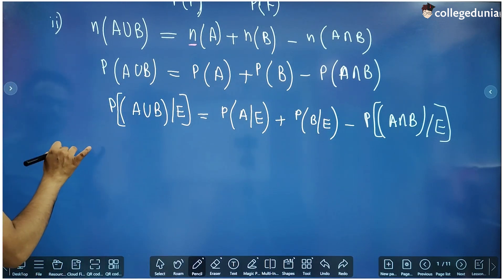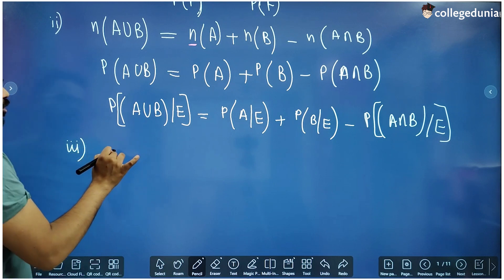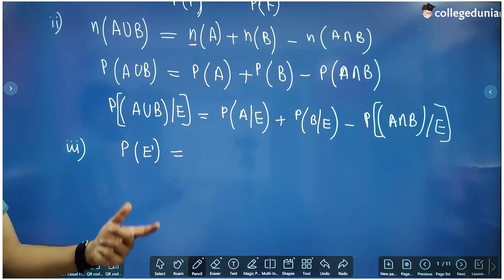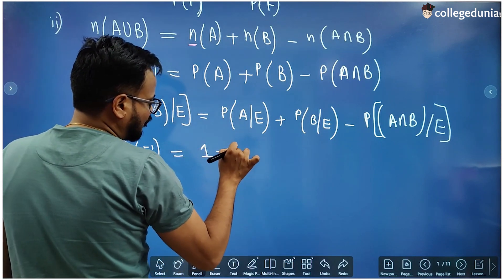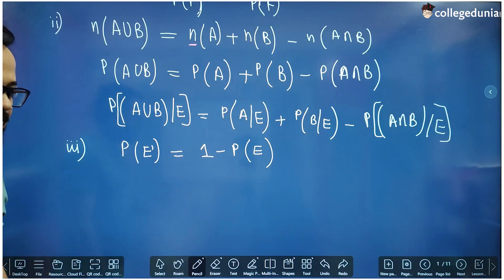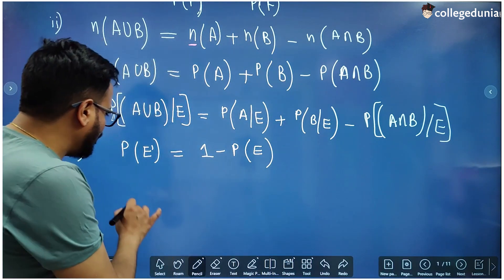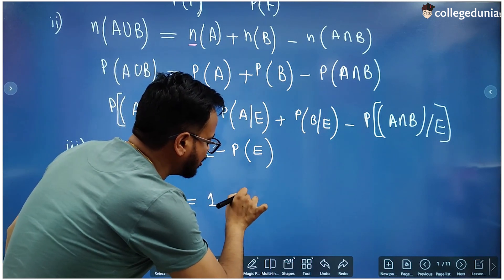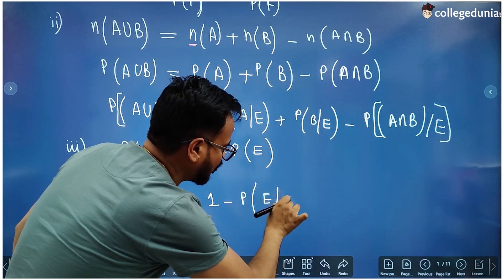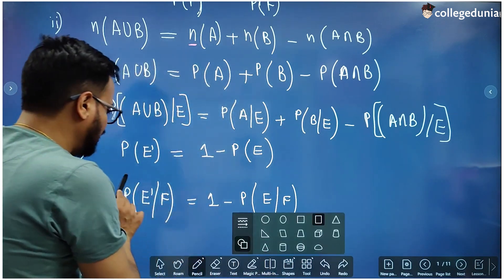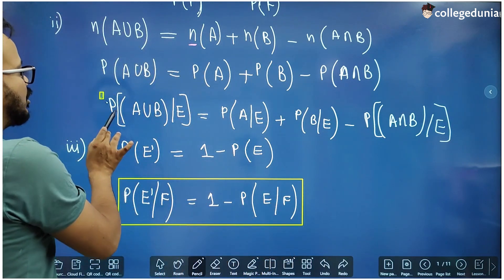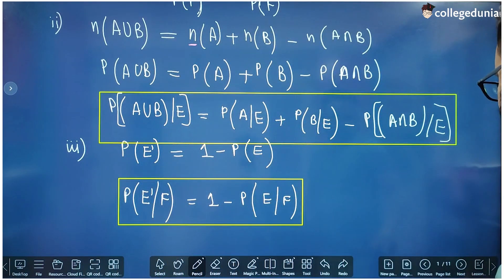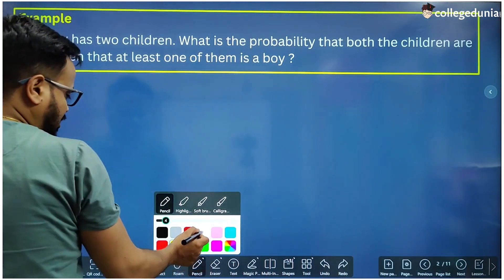The third property of conditional probability: we all know that the probability of non-occurrence of E is 1 minus the probability of occurrence of E. So for some other event F, this becomes: the conditional probability of not-E given F has already occurred equals 1 minus the conditional probability of E given F has already occurred. These are the three important properties of conditional probability. Now let us see a few questions.